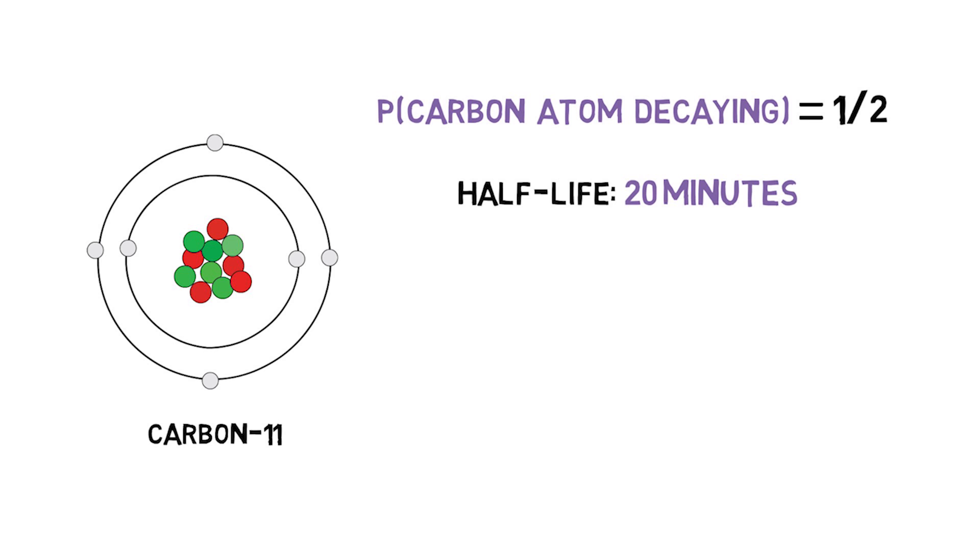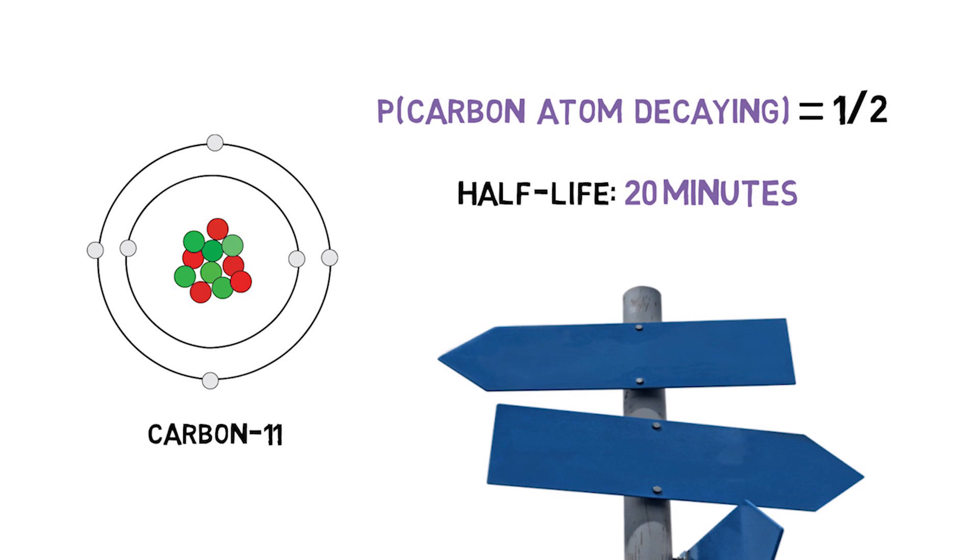So if we refuse to endorse the standard scientific answer, we will have to leave a robust pattern in the data that we have collected about the world entirely unexplained. But if we do endorse the standard scientific explanation, if we do say that roughly half of all carbon-11 atoms decay within any 20 minute period, because the probability of any particular carbon-11 atom decaying within such a time period is one half, we are automatically committed to the existence of chances.